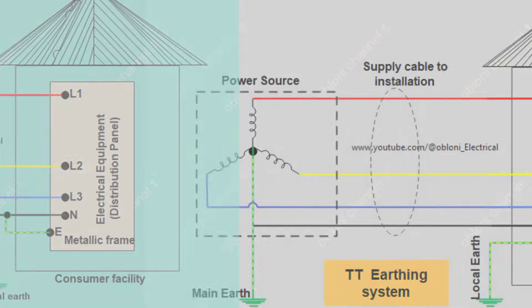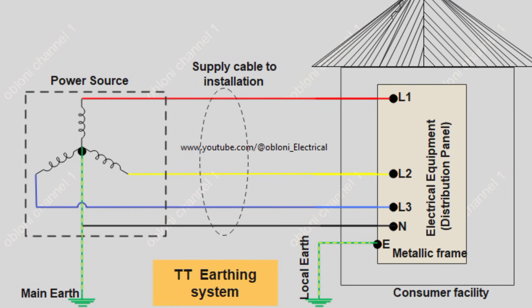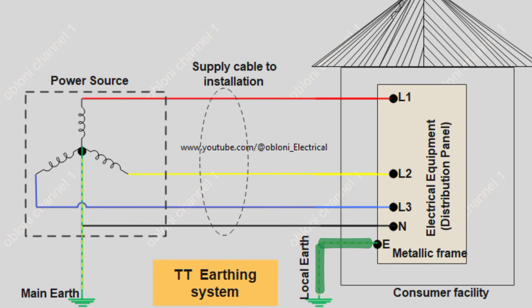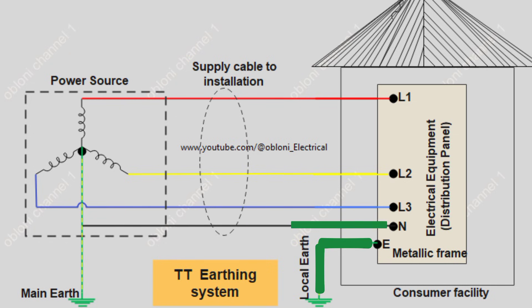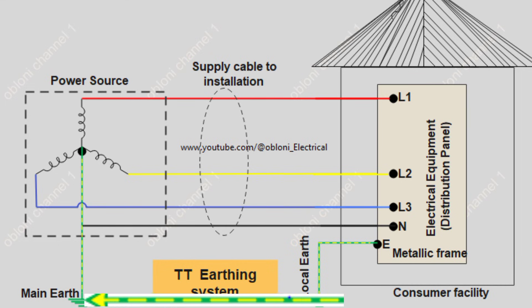The TT earthing system. In the TT earthing system, the neutral point of the power source is directly connected to earth, and all exposed conductive parts of the consumer installation are also directly connected to earth independently. The neutral and earthing conductors must be separate throughout the installation because the power supply distributor only provides the supply neutral to the consumer. When an earth fault occurs in the wiring, the earth serves as the return path for the fault current.